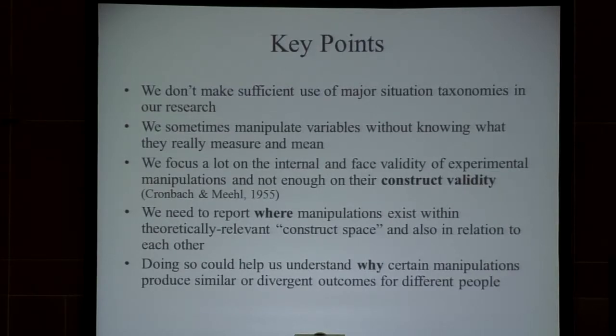One of the things we can do to improve our science is to report where manipulations exist within theoretically relevant construct space and also in relation to each other, on a much more regular basis — either by looking at the way participants perceive situations or having observers trained to differentiate them and locate them in situational space. If we did some of these things, especially with newer manipulations that aren't fully tested, it could help us understand why certain manipulations either do or don't work, especially for different kinds of people with different kinds of developmental or relationship histories.